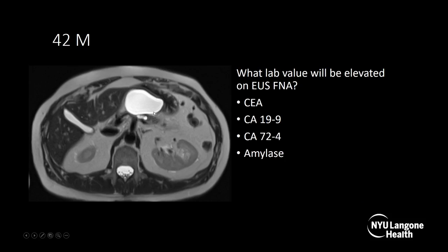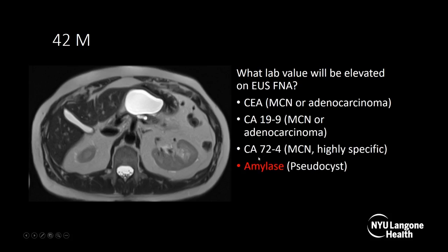A pseudocyst looks like a cyst, and there are many different cysts you can see in the pancreas: pseudocysts, IPMNs, mucinous cystic neoplasms, pancreatic neuroendocrine tumors, among others. Patients may be recommended for an EUS-FNA based on size or complexity. On EUS-FNA, an elevated amylase is seen in a pseudocyst, CEA is seen in a mucinous cystic neoplasm or adenocarcinoma, CA-19-9 can be seen in a mucinous cystic neoplasm or adenocarcinoma, and CA-72-4 can be seen in a mucinous cystic neoplasm and is highly specific for that.